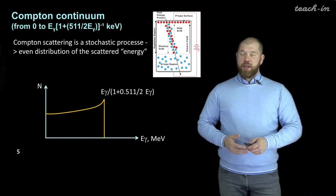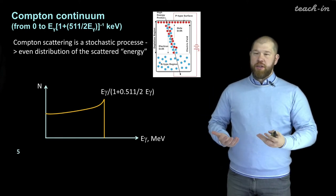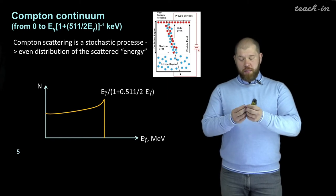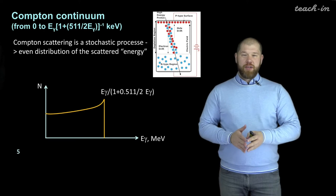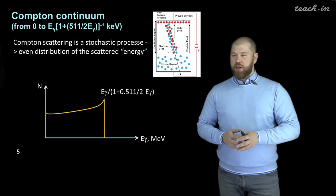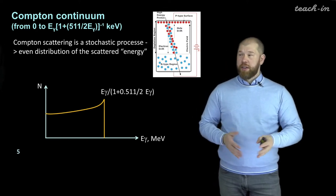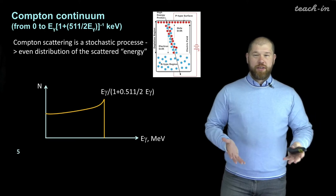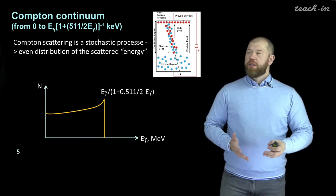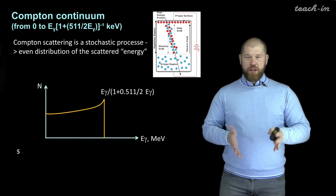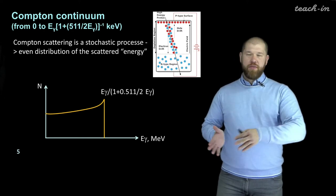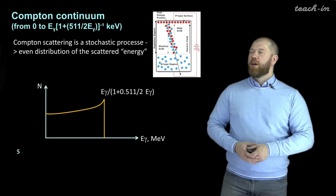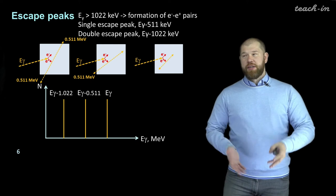Then there is the Compton continuum, which comes from Compton scattering. We remember that during Compton scattering, only part of the energy is transferred to the electron, and we are measuring this part of the energy. Other gamma quanta can be released and go out from the material of the detector, and thus we lose some energy. As the Compton scattering is a stochastic, probabilistic process, we don't have any certain energy but some even distribution of energies, and we see this even distribution in the spectrum.